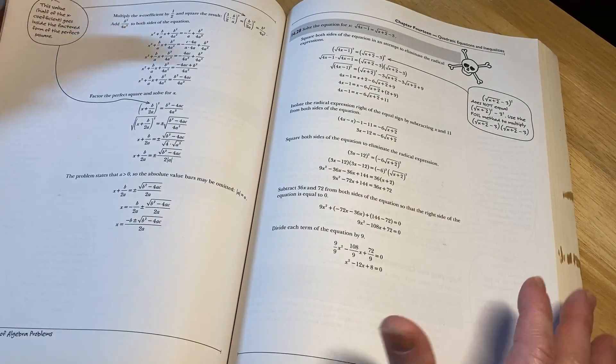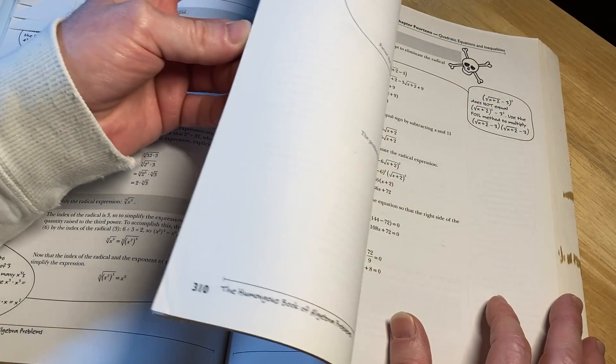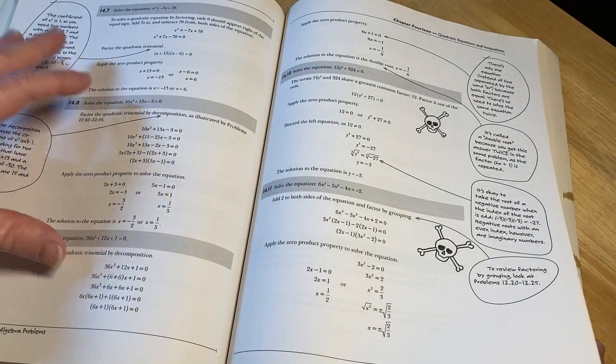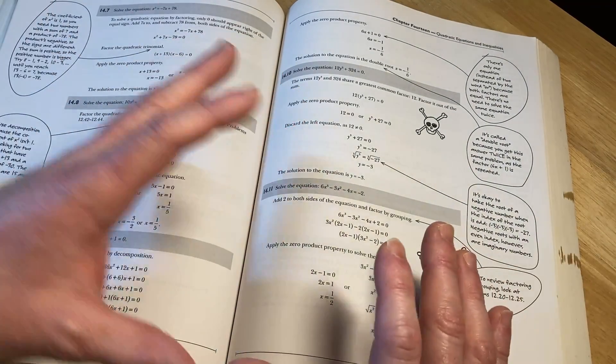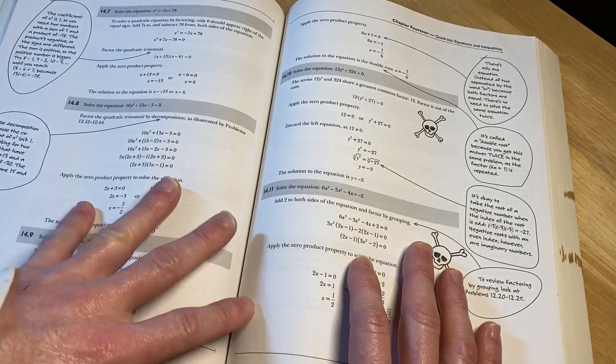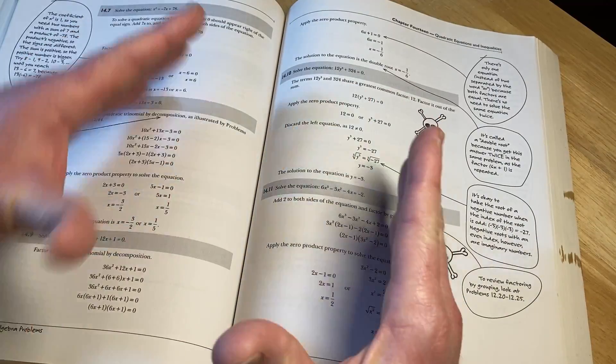When you get to higher level math, everyone struggles. It doesn't matter how good you are. Certain people struggle at the beginning, and once they get over that initial hump, they can catch up. Once you get to a certain level, everyone's kind of the same.